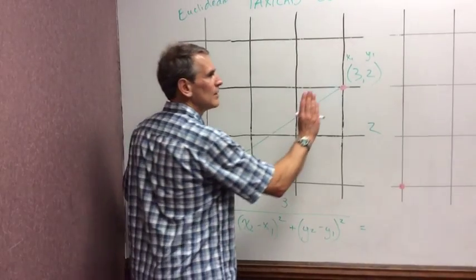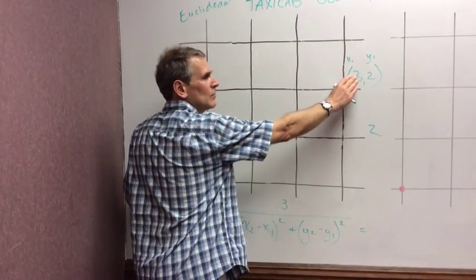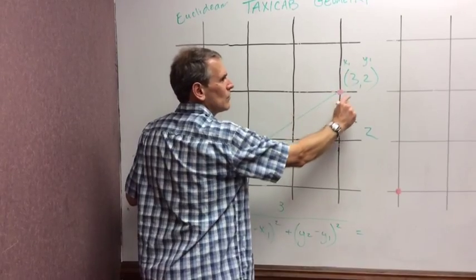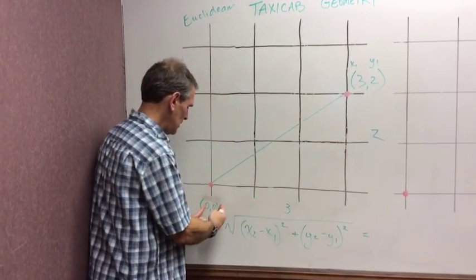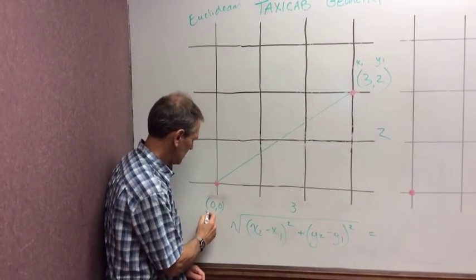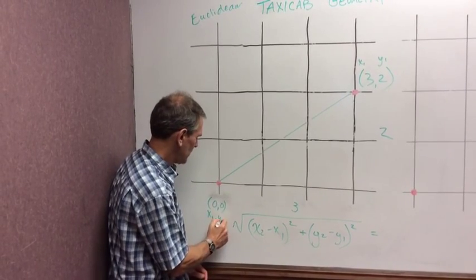I've got a point here. We'll call this point one, x₁, y₁. And over here, I've got x₂, y₂.